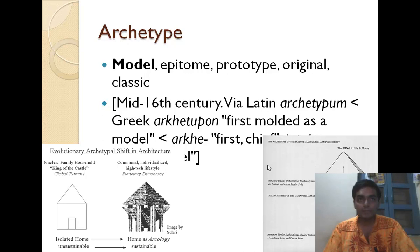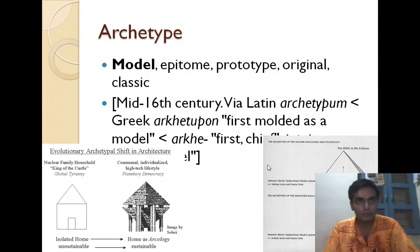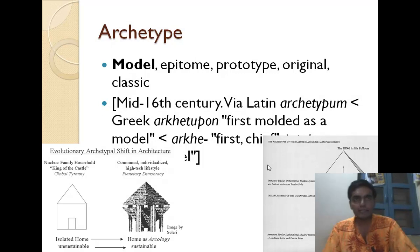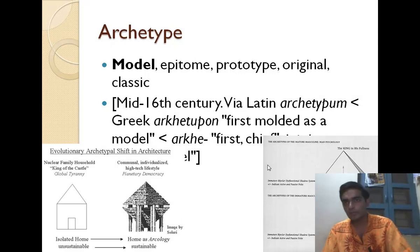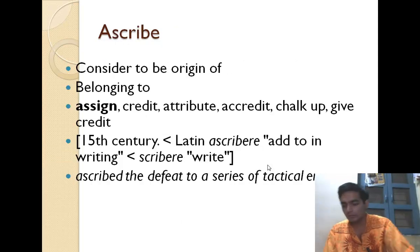Archetype is a model, epitome, or prototype. You can see these two archetypes — this is an evolutionary archetype in architecture. In architecture, we have a model which is called the archetype. You can see examples on the right and the left.